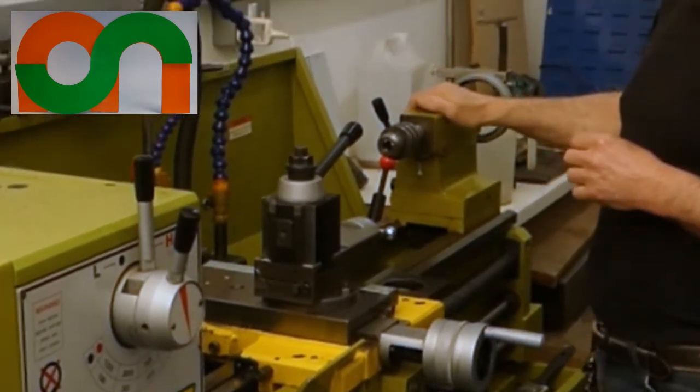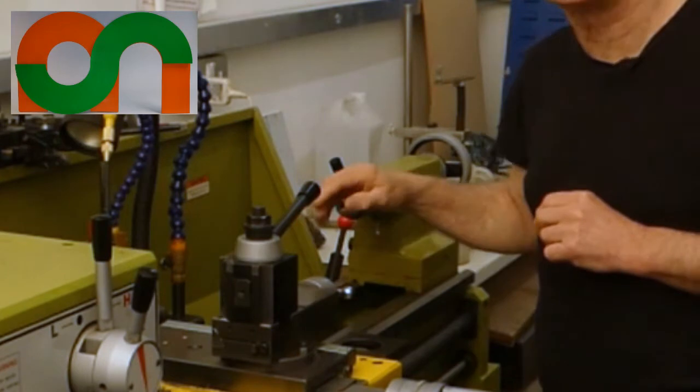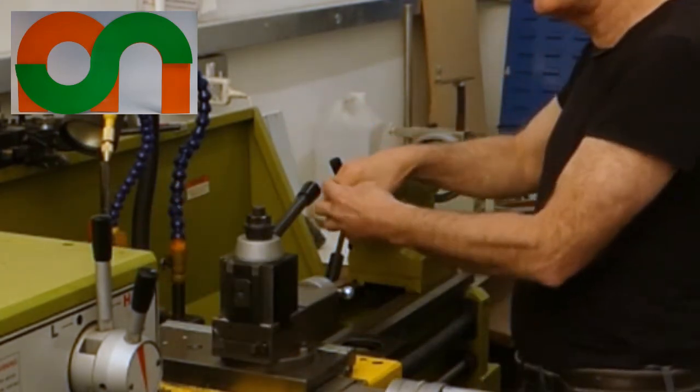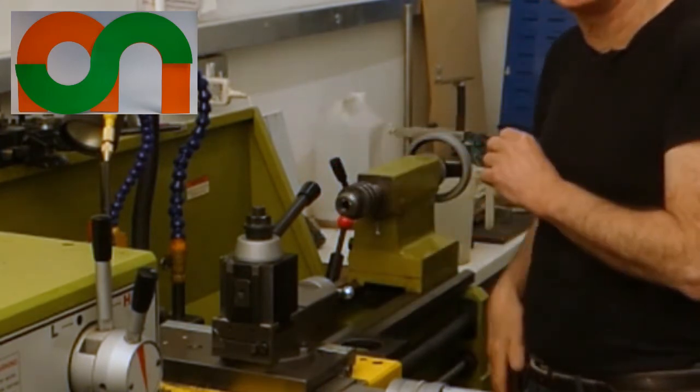The tailstock is used mainly for two things. One drilling holes down the center of your work and two if you have a longer piece of work it's used to support the far end so that it can't move around while you're working.